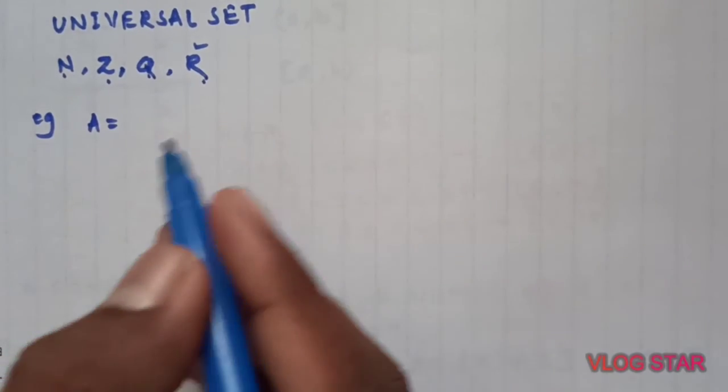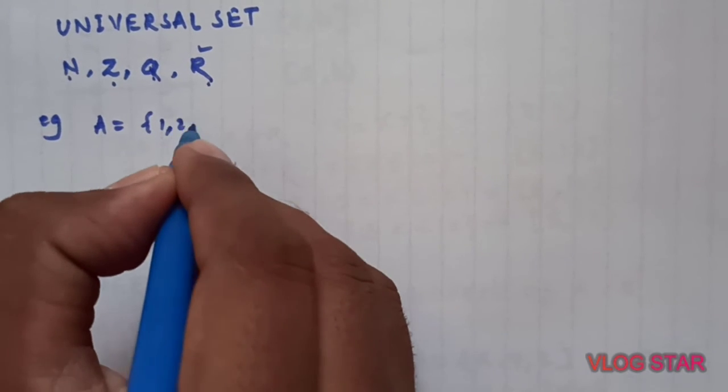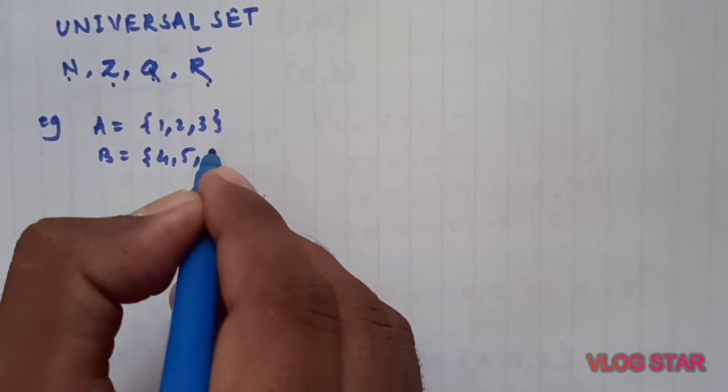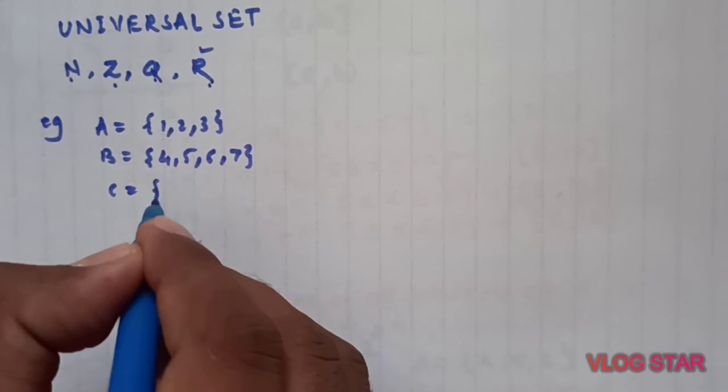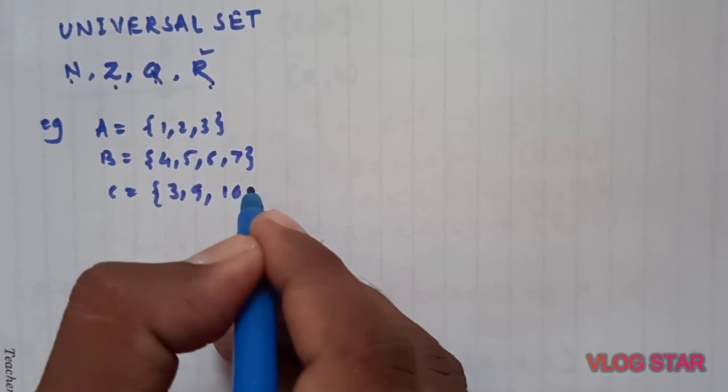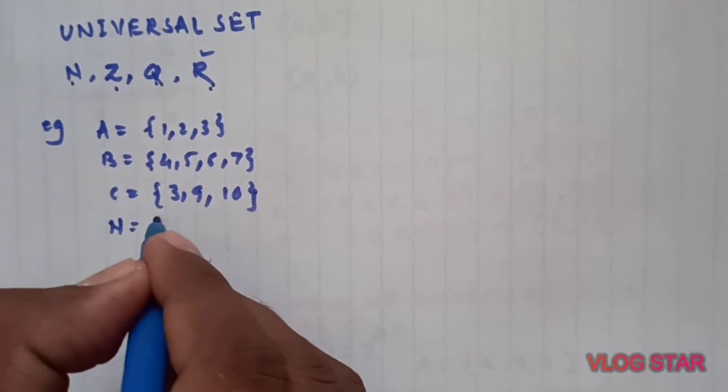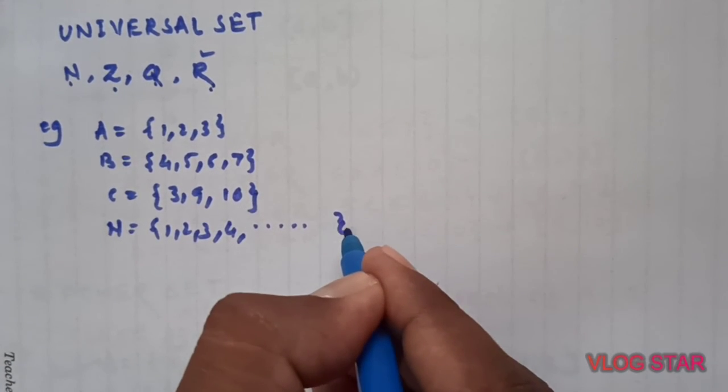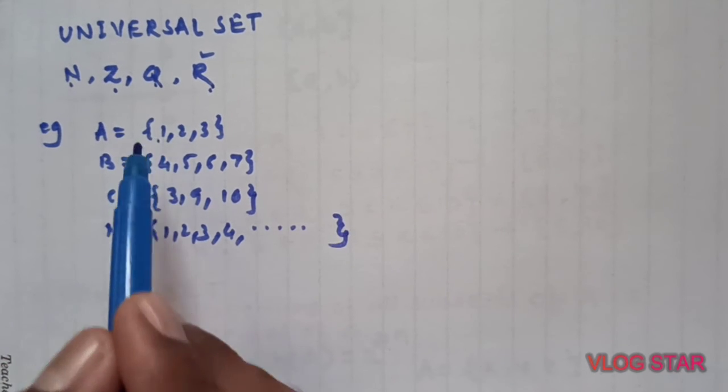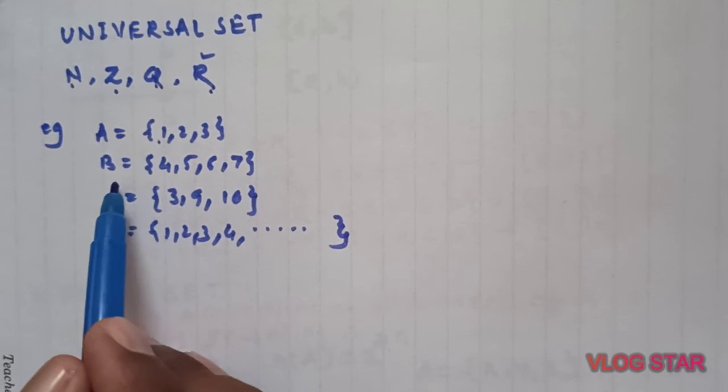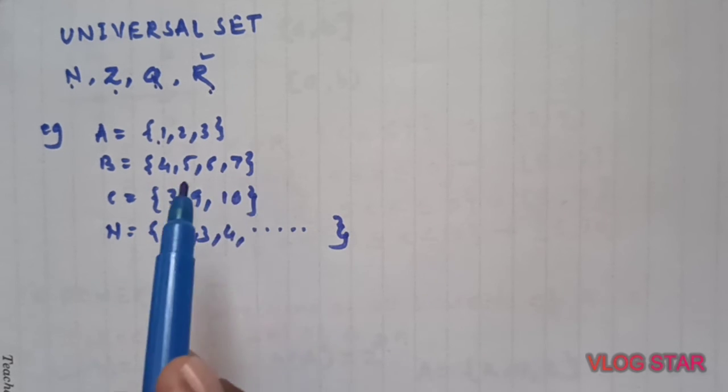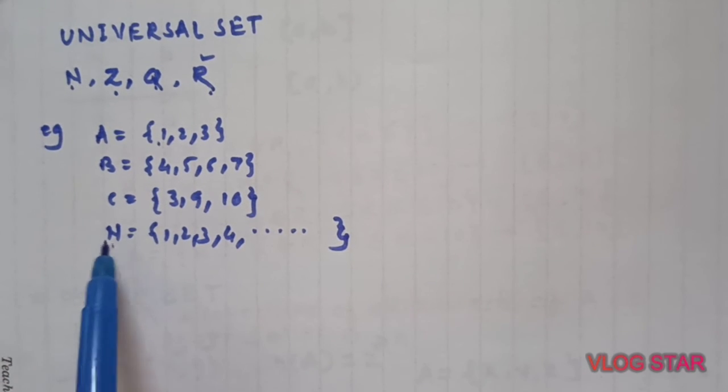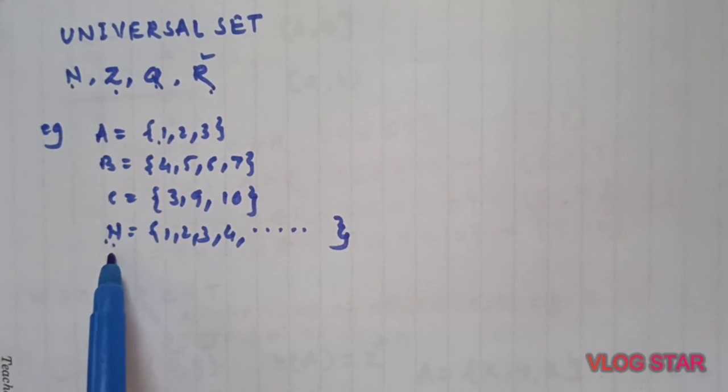Another example. If I have a set A which contains 1, 2, 3, B contains 4, 5, 6, 7, C contains 3, 9, 10, and I have N which contains 1, 2, 3, 4 and so on, the set of all natural numbers. A is a subset of natural numbers, B is also a subset of N, C is also a subset of N. In this case, we can say N is the universal set.